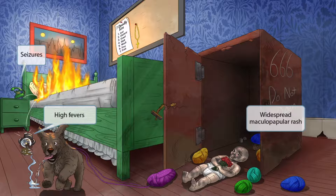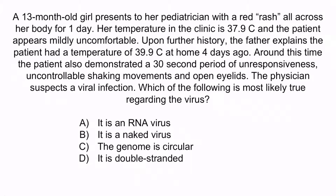Now that we've covered the details of the disease, let's do a quick question to apply this. A 13-month-old girl presents to her pediatrician with a red rash all across her body for one day. Her temperature in the clinic is 37.9 Celsius, and the patient appears mildly uncomfortable. Upon further history, the father explains the patient had a temperature of 39.9 Celsius at home four days ago. Around this time, the patient also demonstrated a 30-second period of unresponsiveness, uncontrollable shaking movements, and open eyelids. The physician suspects a viral infection.